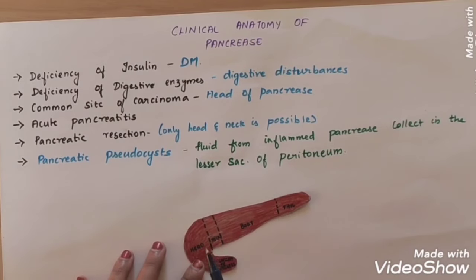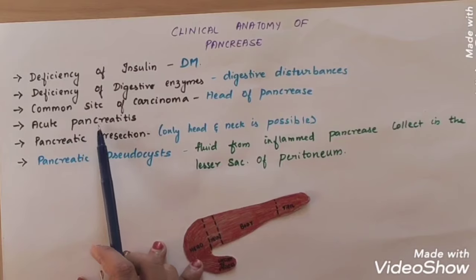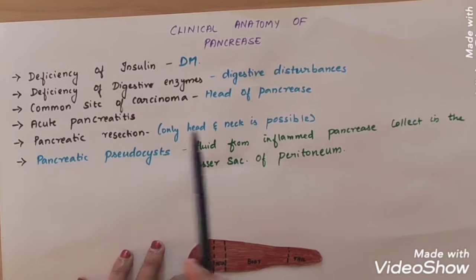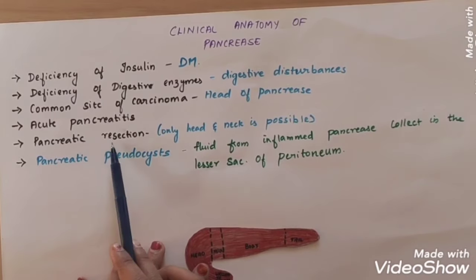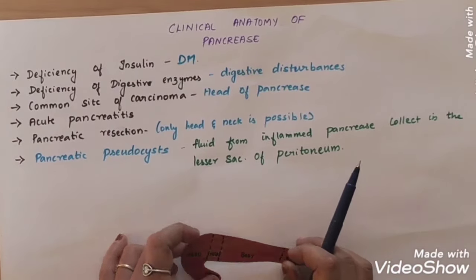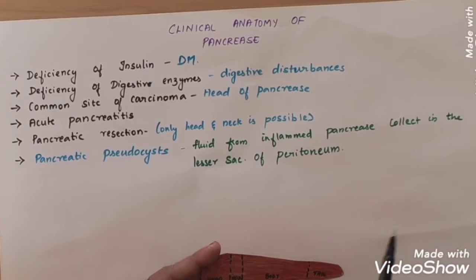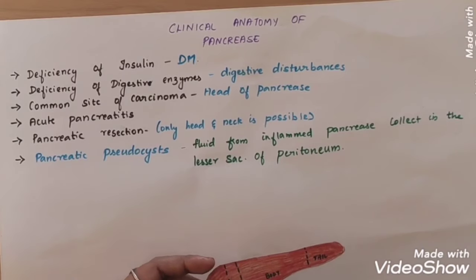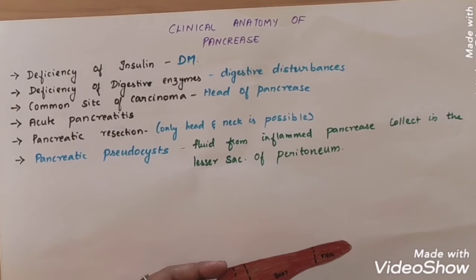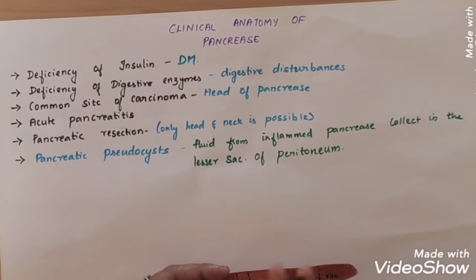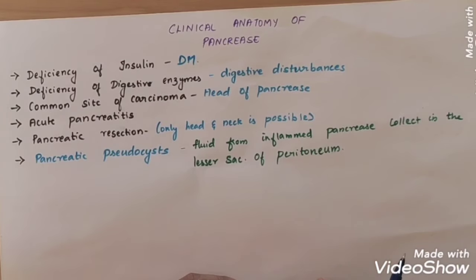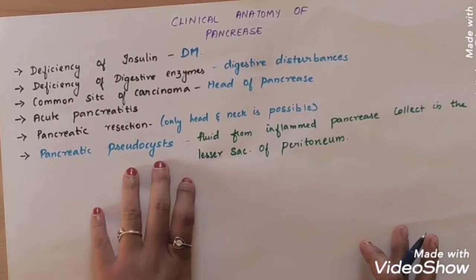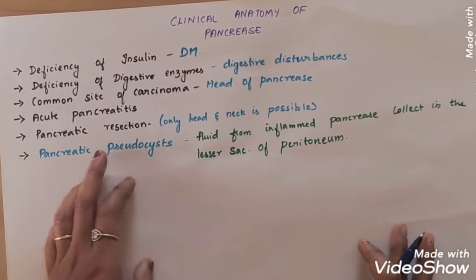In the pancreas, inflammation is called pancreatitis. Pancreatic resection is a very difficult process. If there is a carcinoma or any problem, we cut and remove the part of the pancreas — the head and neck — so we can remove the head, neck, and part of the structure of the pancreas.